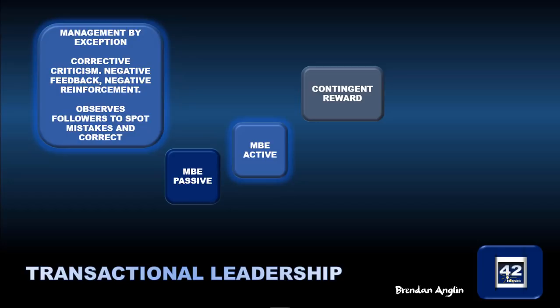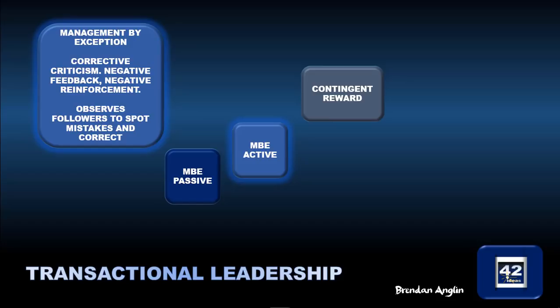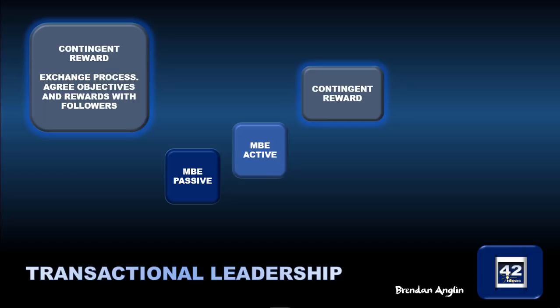Management by exception in an active way is about observing followers before problems happen, to spot mistakes and correct them — but it's again about corrective criticism, negative feedback, and negative reinforcement, reflecting Theory X thinking. Contingent reward is an exchange process: you agree objectives and rewards with followers, giving them money or rewards in return for work.